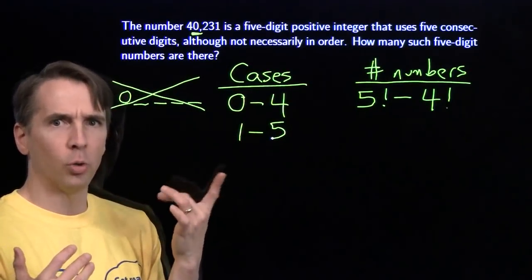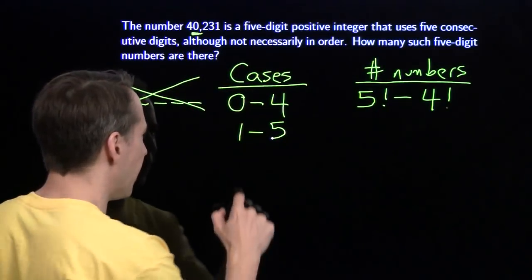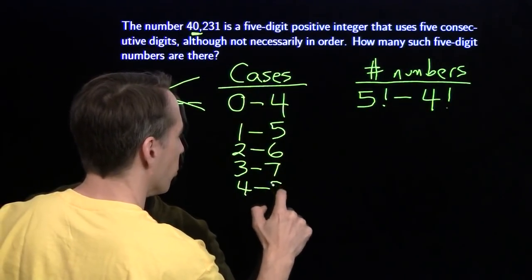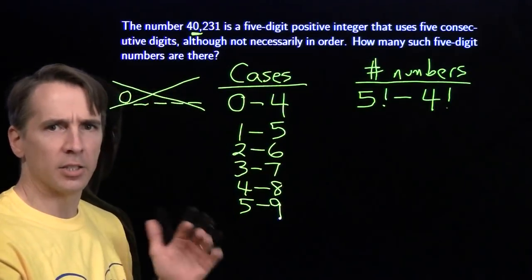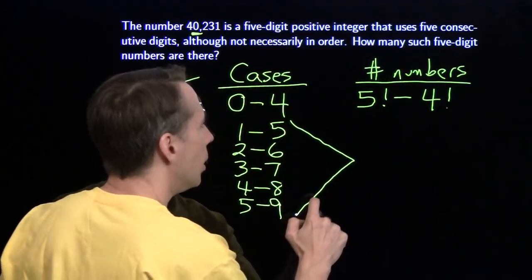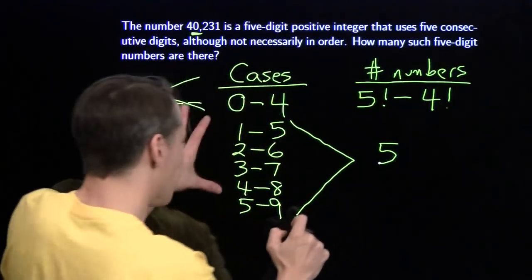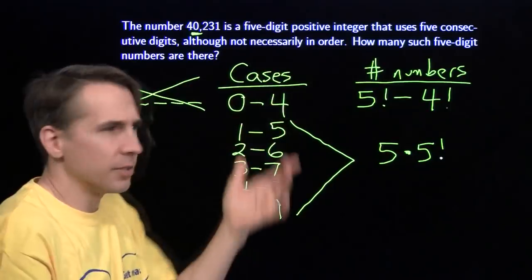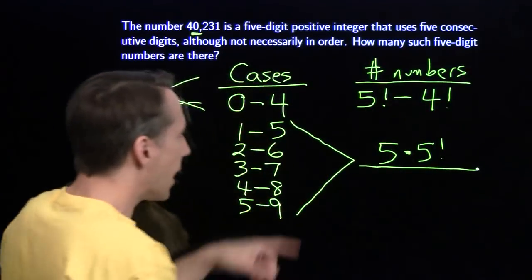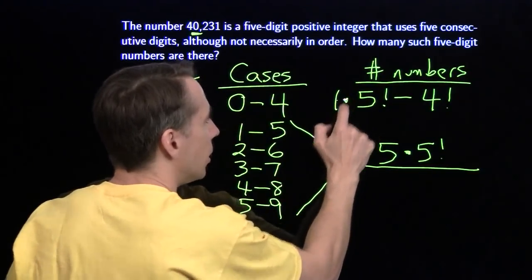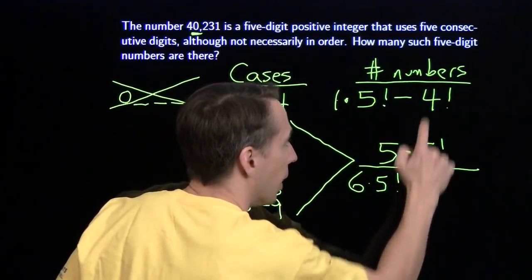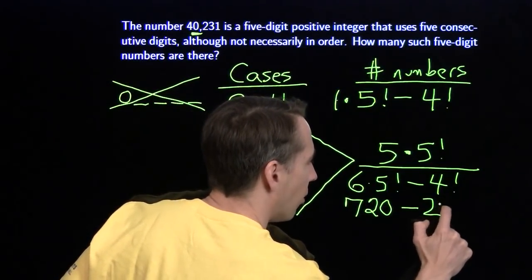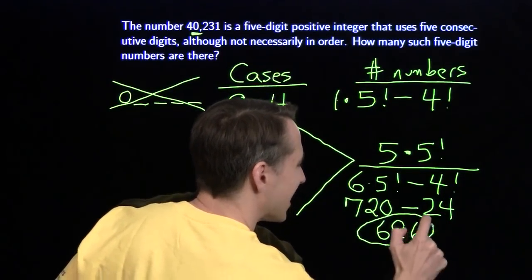Let's go on to the next case: one through five. That's just going to be five factorial ways to order them — they'll all produce different five-digit numbers. Same thing for the digits two through six, three through seven, four through eight, and five through nine. Each one of these has five factorial possible orders. So combining them all: there are five of these cases each contributing five factorial, plus the one case of zero through four which is five factorial minus four factorial. This is six times five factorial minus four factorial, which is six factorial minus four factorial. Six factorial is 720, four factorial is 24, giving us a total of 696.